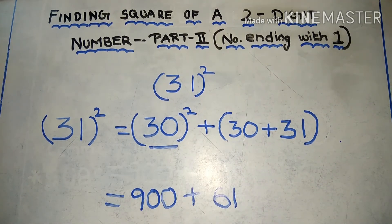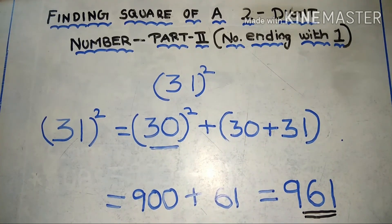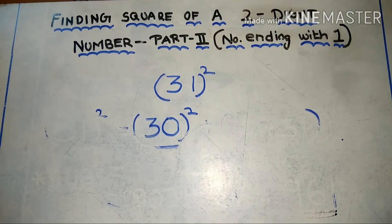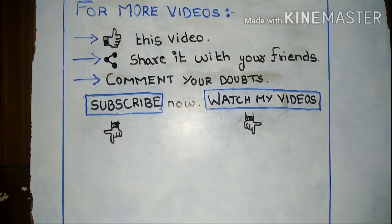Finally, we found the square of 31, which is 961. Was this method easy? Put your feedback in the comment box. Hope you liked the video. Subscribe for more videos. Thanks for watching.